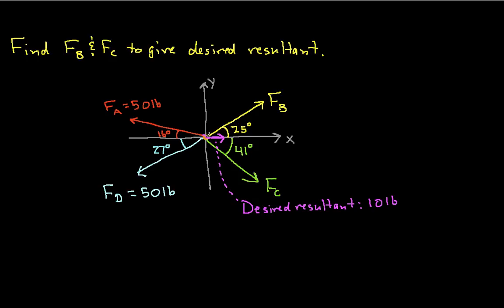And in fact, what we want to do are choose Fb and Fc to create a resultant force that is 10 pounds in the x direction and 0 pounds in the y direction. So maybe what we want to do is start accelerating our camera down the field. So in this case, we want to find what the magnitudes of the vectors are going to be. So how do we do this?